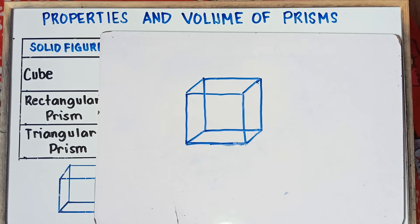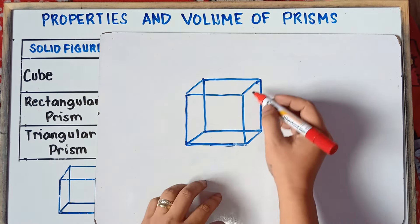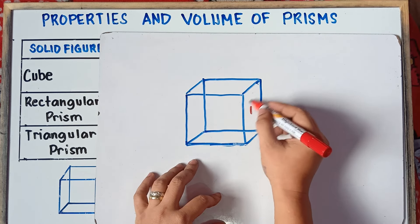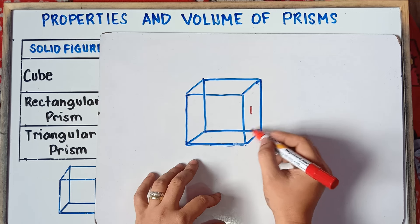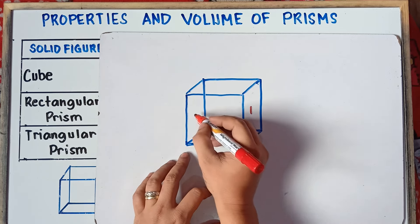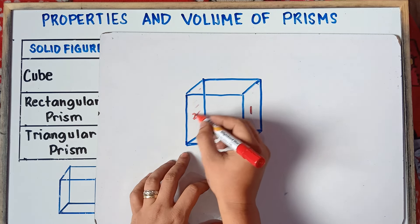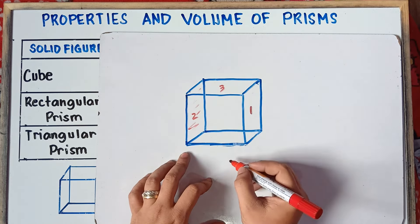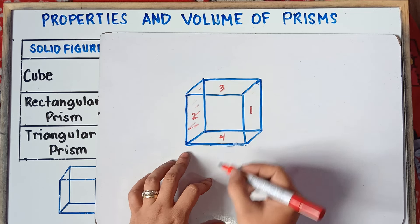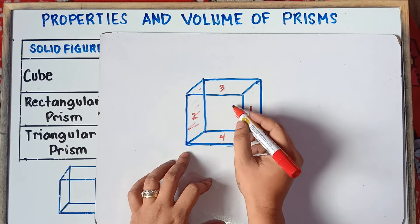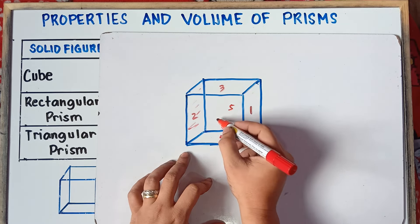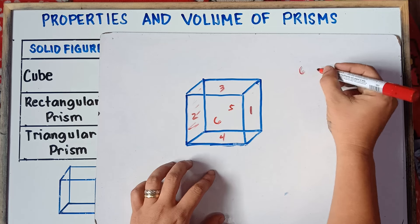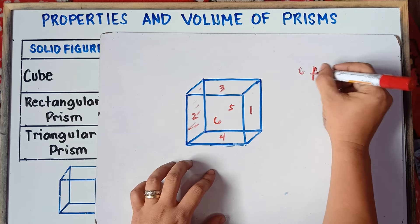So let's count the number of faces. We have face one — the front face, two — the left side, three — the upper part, four — the bottom base, five — at the back, and six — in front. So therefore, we have six faces for the cube.